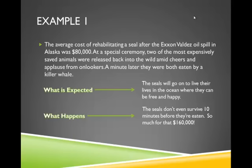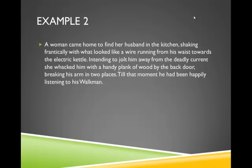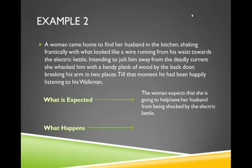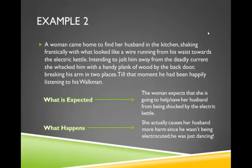Let's look at another example. What is the irony here? Well, let's first look at what is expected. The woman expects that she is going to help save her husband from being shocked by the electric kettle. She assumes that since he is jerking around and she sees the wire, he's being electrocuted. What actually happens? She actually causes her husband more harm. He wasn't being electrocuted — he was just dancing. So: expect one thing, the other thing happens. That is an example of irony.